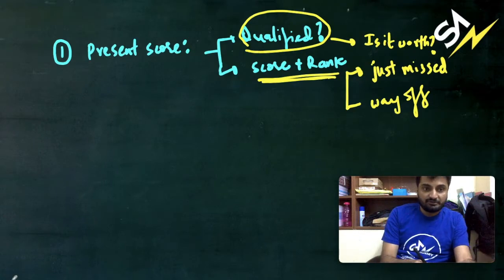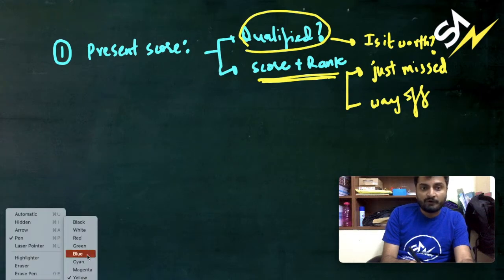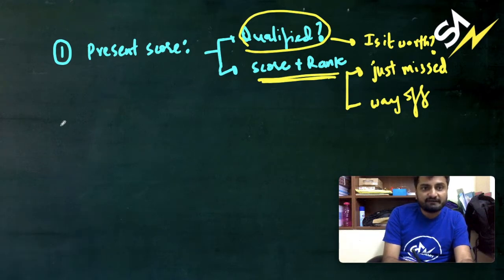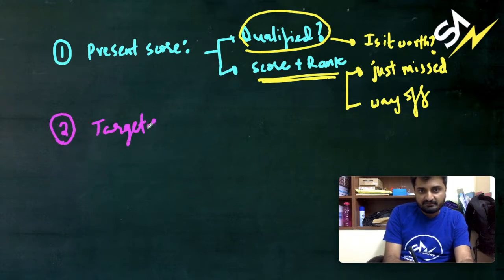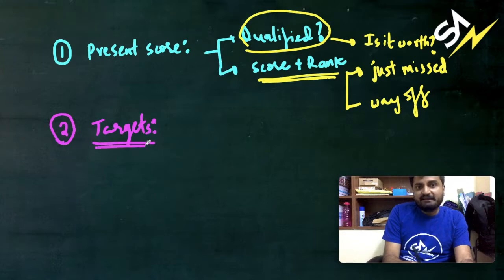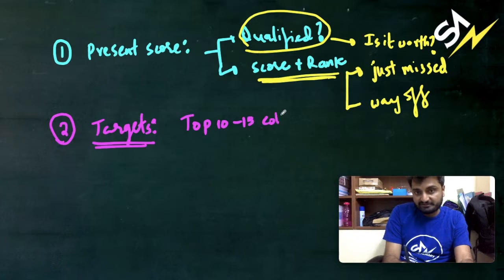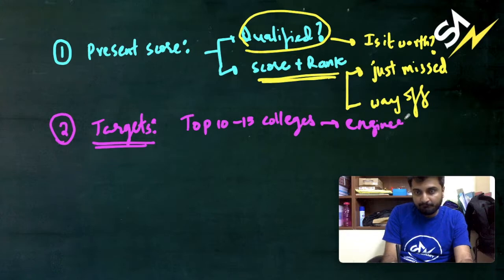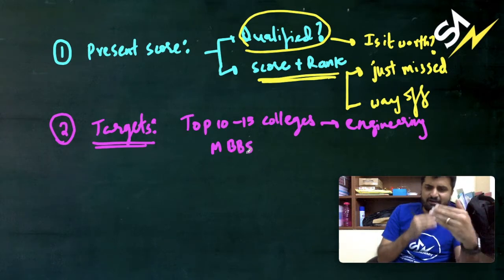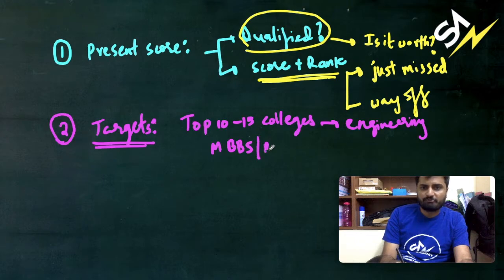Answering these questions, what I would tell you is if you are opting for a long term program, you need to have targeted colleges, you need to have few targets. Your target ideally should be to get into top 10 to 15 colleges if you consider the engineering program. And if you are considering the NEET program, you have to aim for a seat in MBBS first. Worst case scenario, you have to opt for BDS. This is for a NEET program.